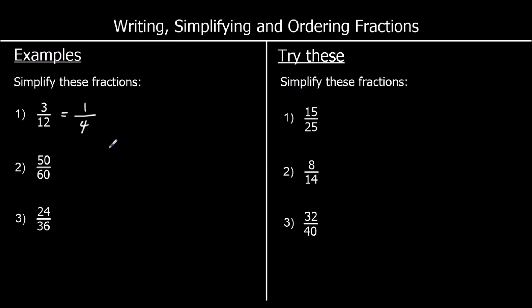Can I simplify this any further? I can't — the only times table one and four are both in is the one times table, and that's no good for simplifying fractions. So one quarter is as simple as it gets. For question two, we've got 50 over 60. The biggest times table they're both in is the ten times table. We can say that 50 is five tens and 60 is six tens. And I can't simplify that any further because the only times table five and six are both in is the one times table.